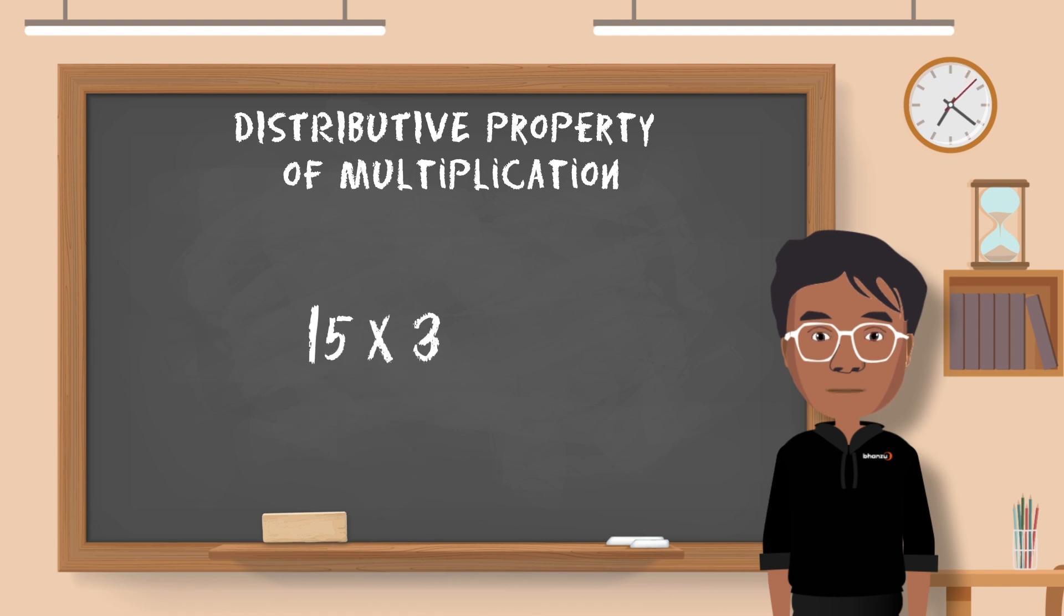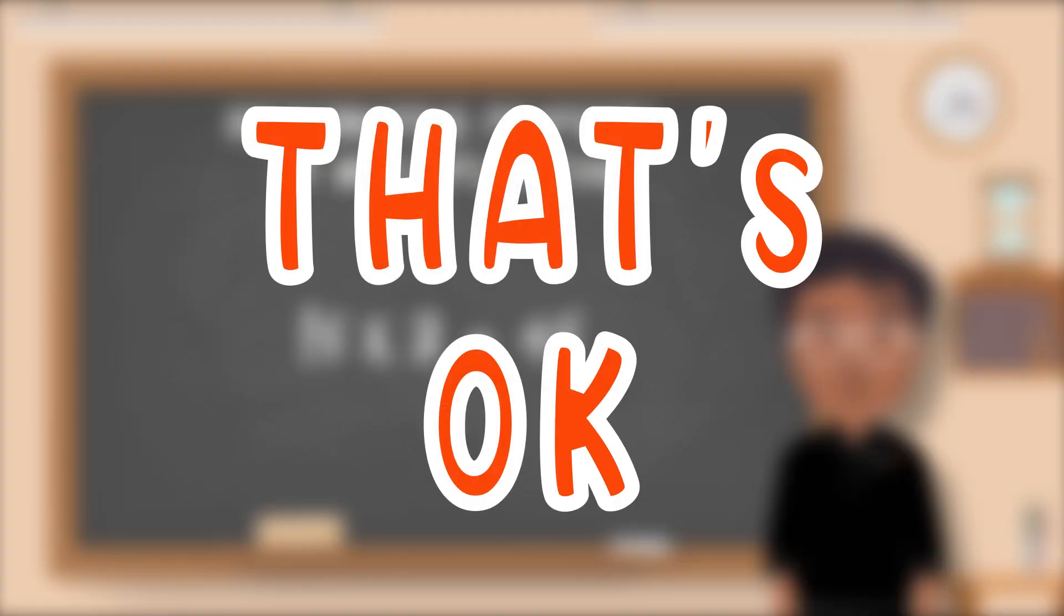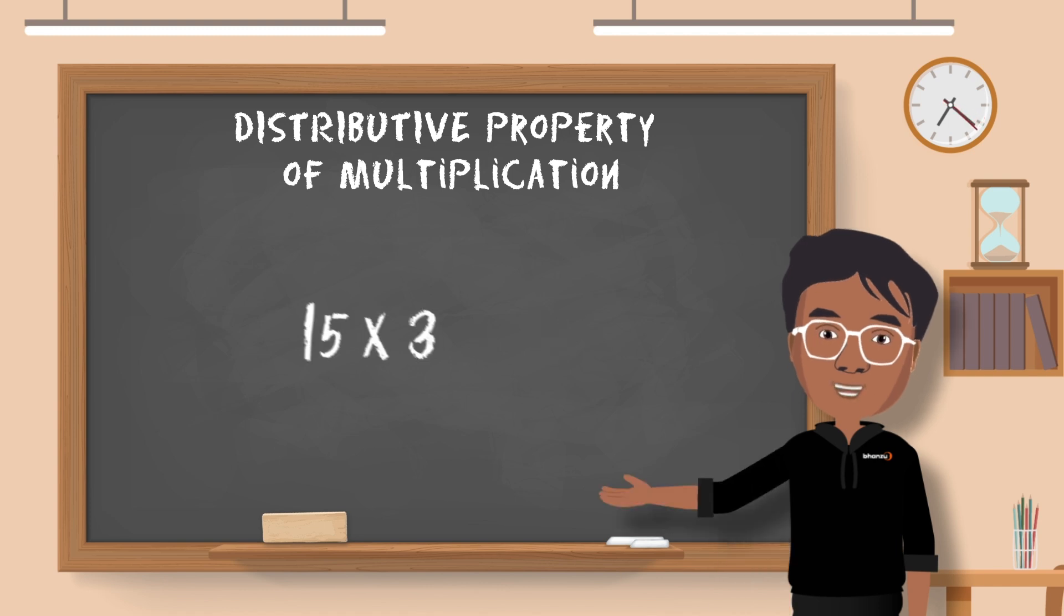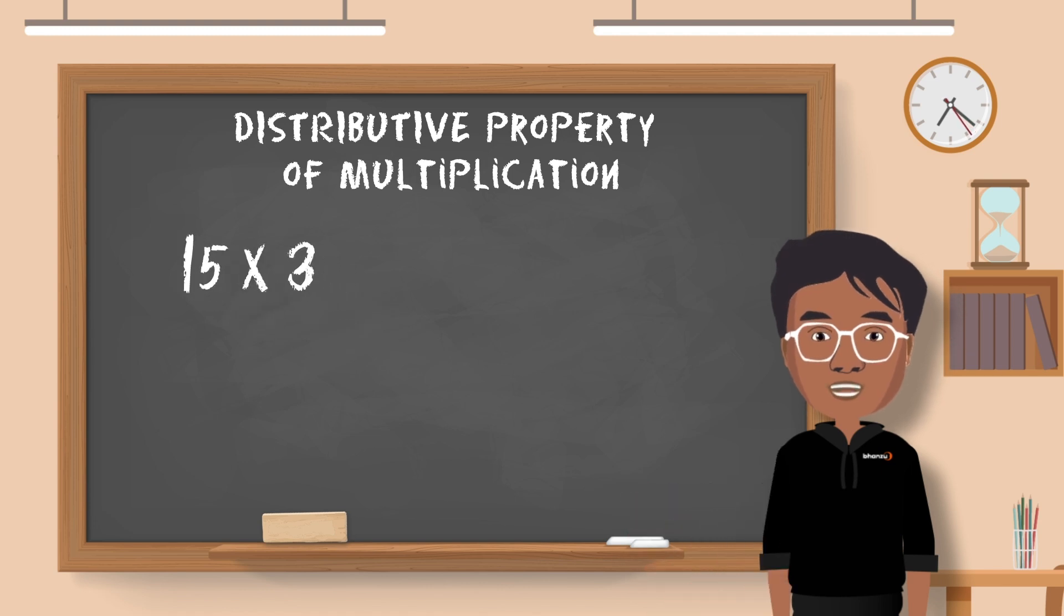Let's understand this with an example. Take 15 multiplied by 3. You know that the answer is 45, right? But if you find it difficult to multiply 15 by 3, that's okay. I will teach you a much simpler method to find the answer. In this case, you can distribute 15 into 10 plus 5 and then perform the multiplication. Let's see how this is done.